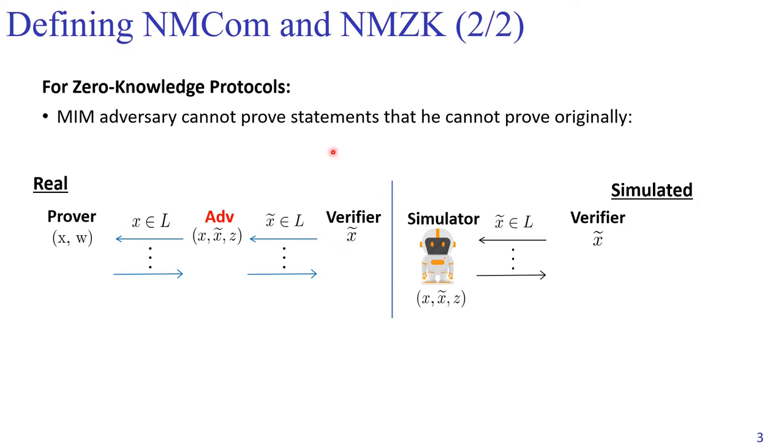Similar to the non-malleable commitment, the goal here is to make sure that the man-in-the-middle adversary cannot prove statements that he cannot prove originally, meaning without talking with this honest verifier in the left.